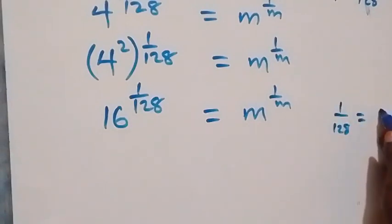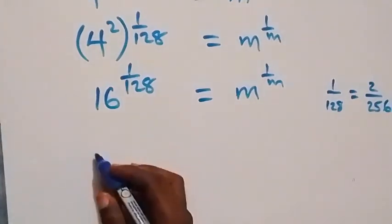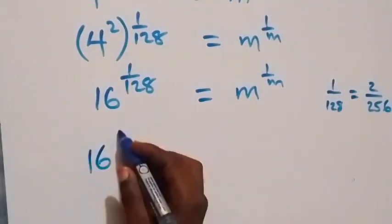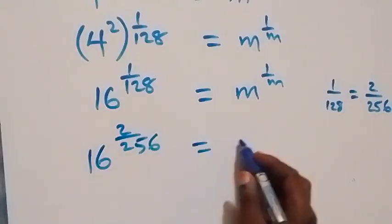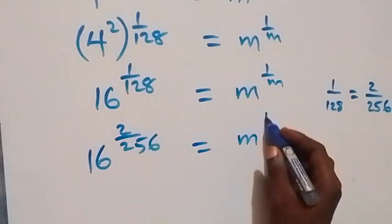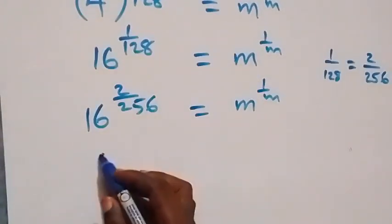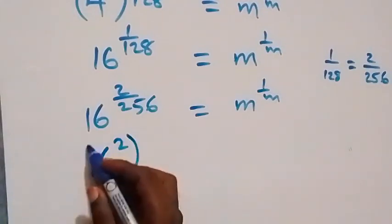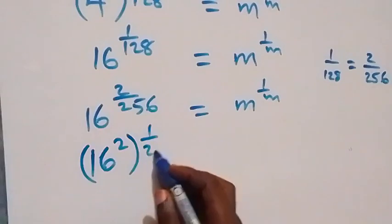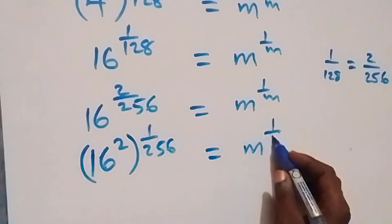We can write 1 over 128 again as 2 over 256. This now becomes 16 raised to power 2 over 256 equals to m raised to power 1 over m. This can be written as 16 squared, raised to power 1 over 256 equals to m raised to power 1 over m. And 16 squared is 256, so we have 256 raised to power 1 over 256 equals to m raised to power 1 over m.